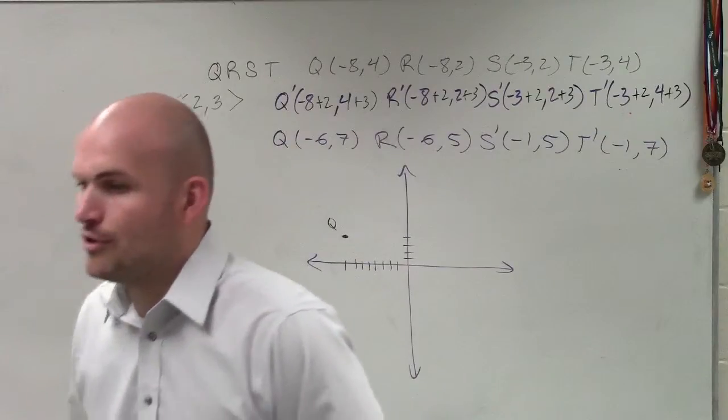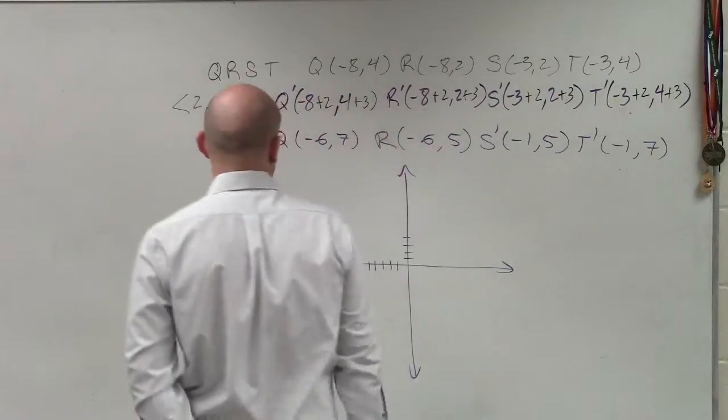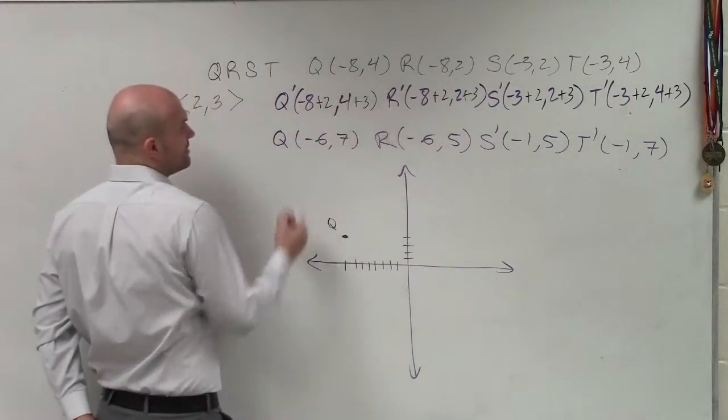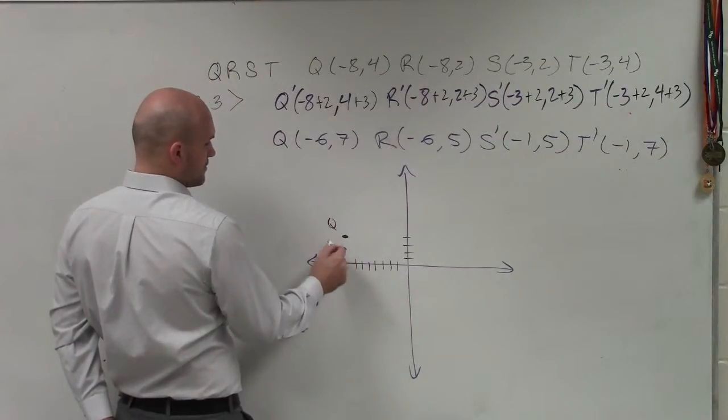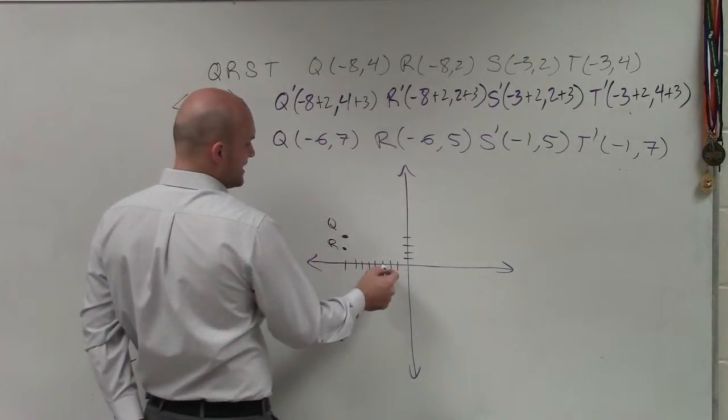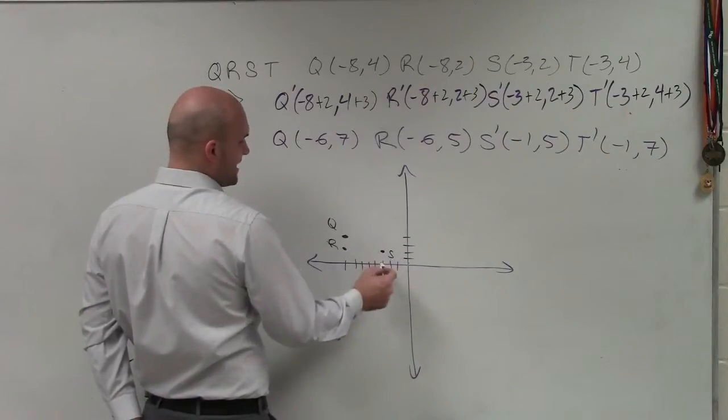It's really, really important when you guys are doing transformations that you label your points. So Q is negative 8, 4, R is negative 8, 2, S is negative 3, 2, and T is negative 3, 4.